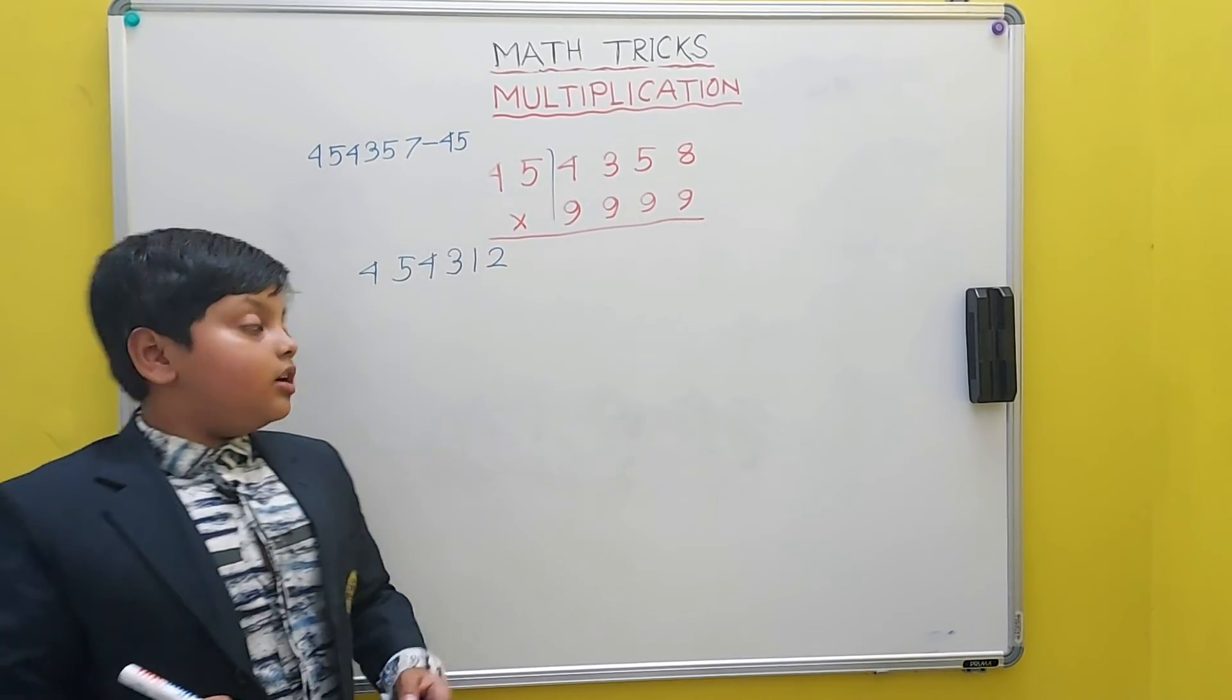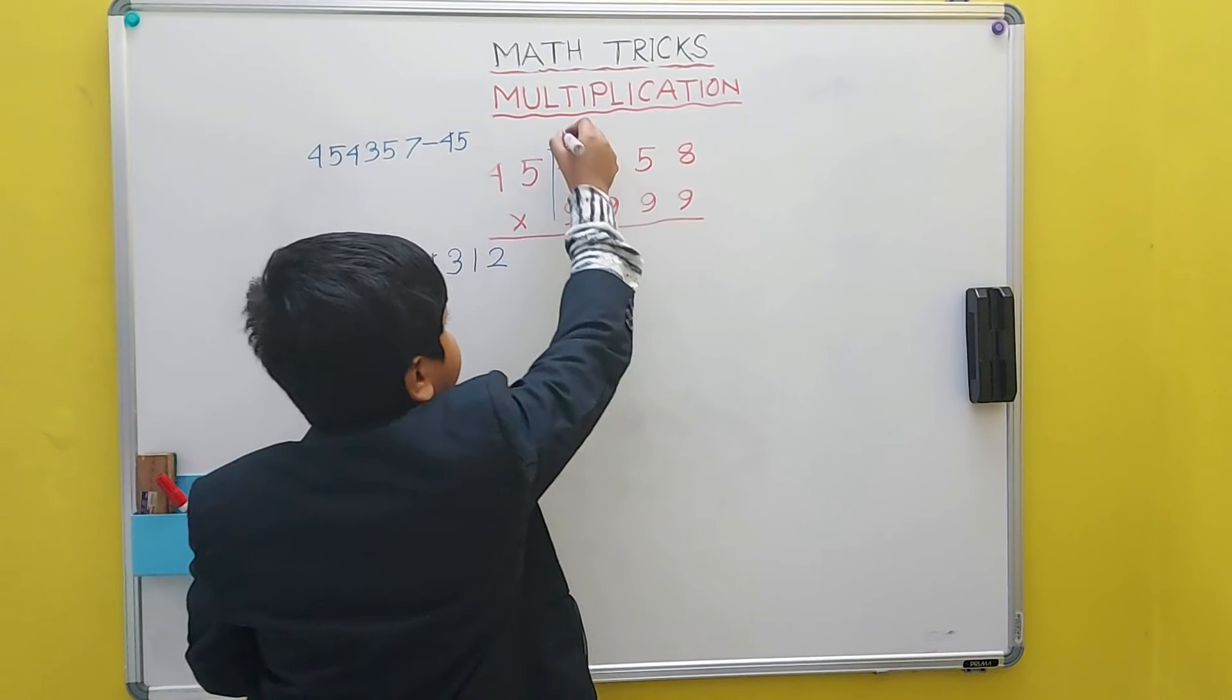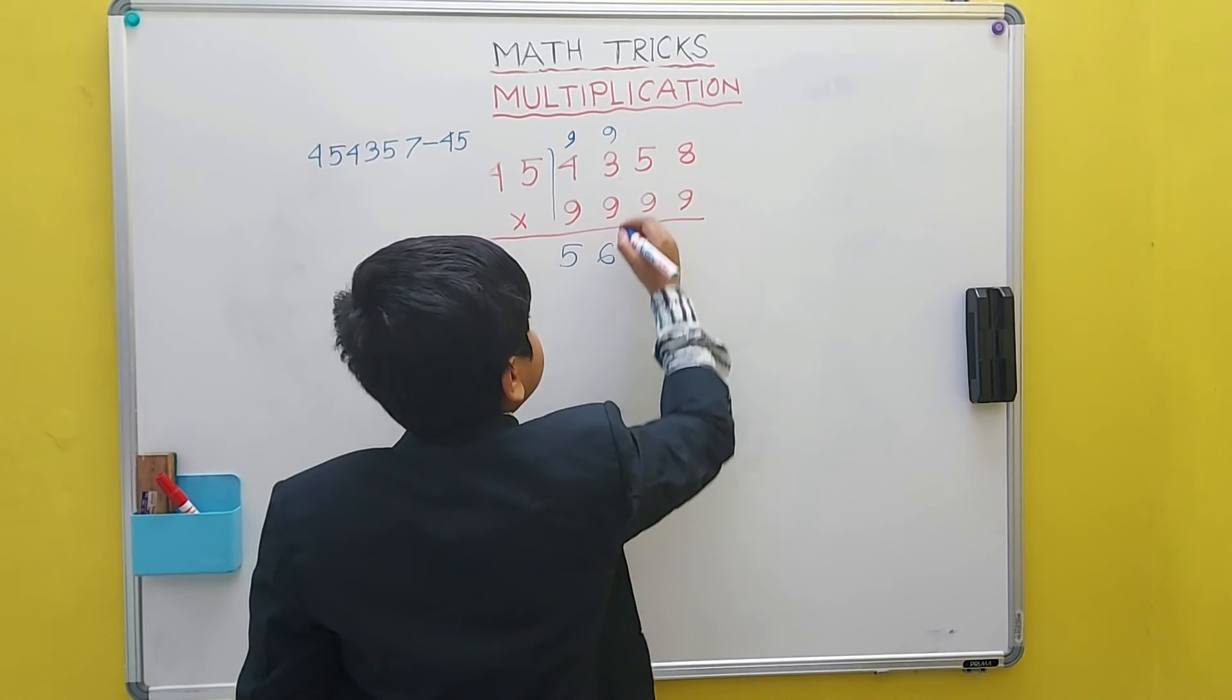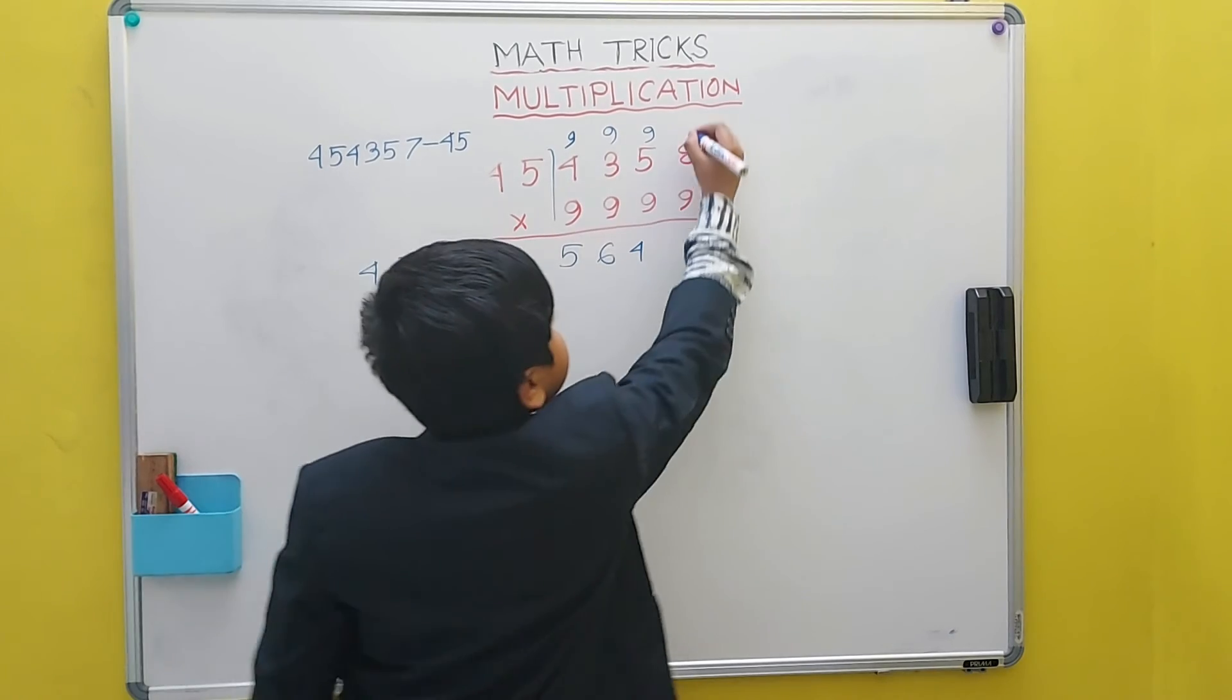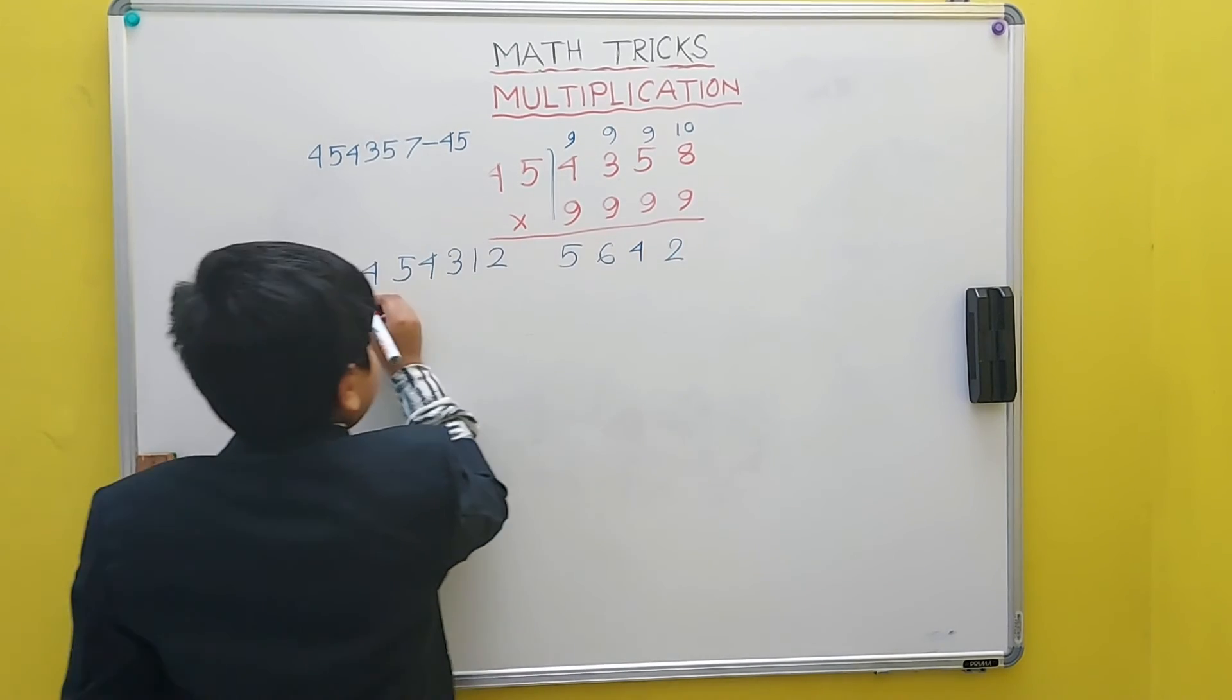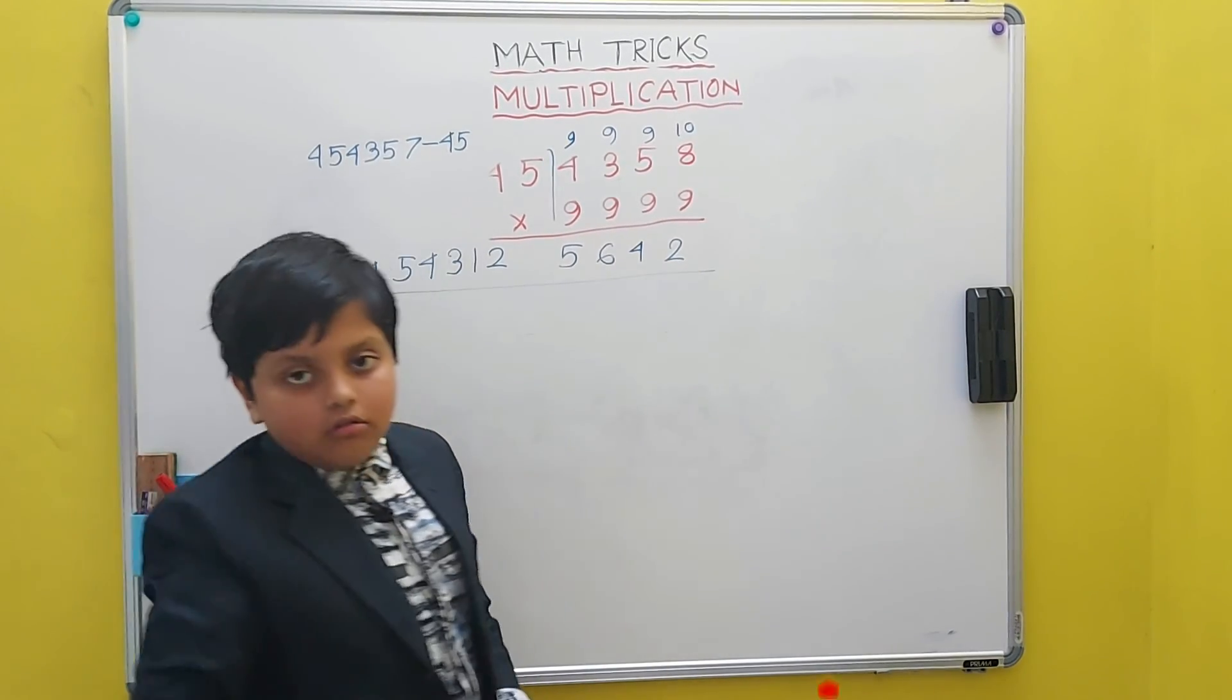Now, we have to take 9 minus 4 which will be 5. 9 minus 3 which will be 6, 9 minus 5 which will be 4 and then 10 minus 8 because it is the last. So, 10 minus 8 is 2 and this is our answer: 454312564.